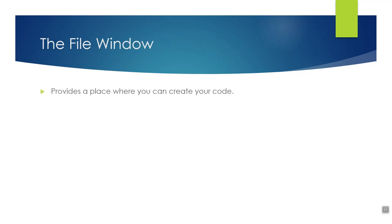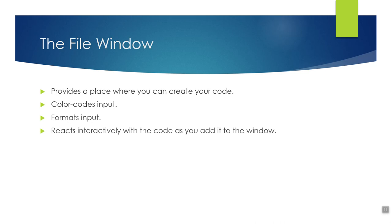The file window at the top is where you create your code — this will get more complex as we create code that we can save and run inside AutoCAD. Some of the cool features are that it color-codes your input, helps you organize it, formats it so it's easier to read, and reacts interactively with the code as you put it in the window.